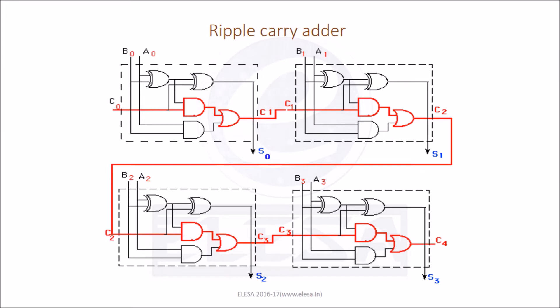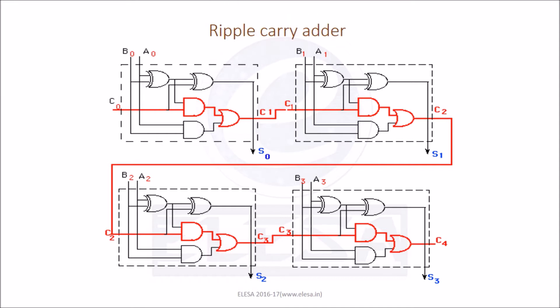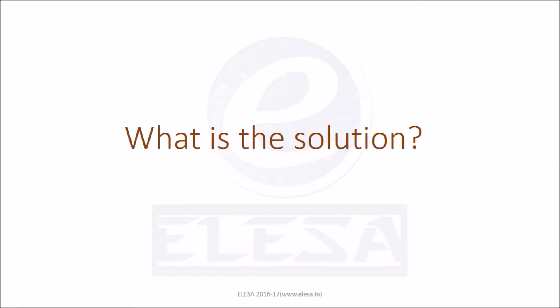You can see how the carry ripples in ripple carry adder. In this circuit, C1 will be available only after it is calculated from A0, B0 and C0. Then C2 will be available only after C1 is available. Then C3 will be produced only after C2 is produced. In such a way, the carry is generated passing from gate to gate, depending upon the carry generated in the previous stage. Until the propagation delay has elapsed, you will not get the correct answer.